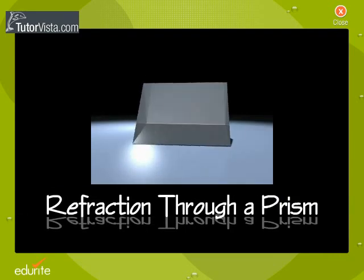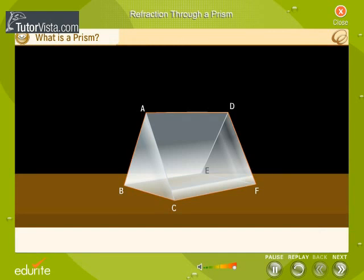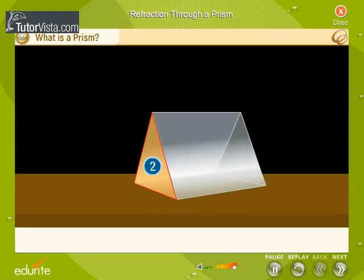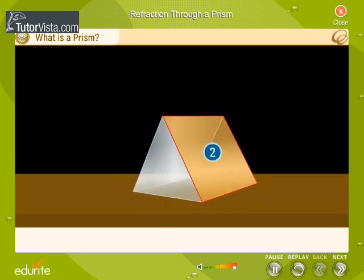Refraction through a prism. A prism is a piece of glass or any other transparent material bounded by two triangular and three rectangular surfaces.